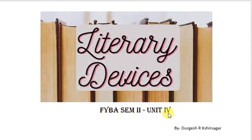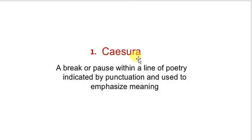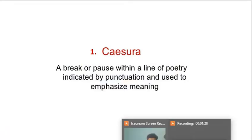So without delay let us move on towards literary terms. The first literary term is caesura. What is meant by caesura? Caesura is a break or a pause within a line of poetry, indicated by punctuation, and used to emphasize meaning. Let us understand the meaning first, because understanding the meaning is a very important part.